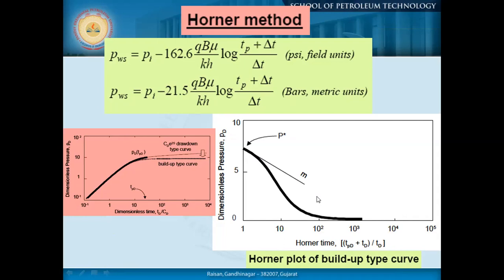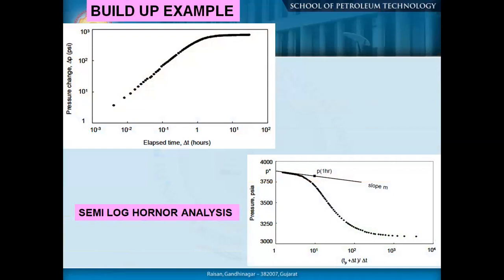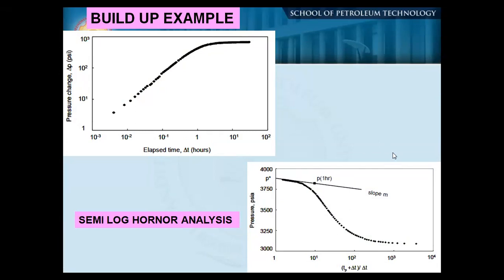Once we consider t_p, the straight-line analysis gives us certain information. The x-axis value for the Horner plot is (t_p + delta-t) / delta-t, where delta-t is the elapsed time. This is a normal buildup example — we are plotting pressure versus Horner time. Horner time accounts for t_p so that we get a specific straight-line period to understand certain parameters.